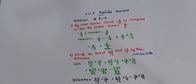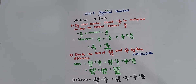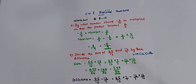9th question: divide the sum of 65 by 12 and 12 by 7 by their difference. First, find the sum of 65 by 12 and 12 by 7, then find the difference, and then divide. Sum: 65 by 12 plus 12 by 7. Find the LCM of the denominators to make equivalent fractions — the LCM is 84. So, 65 by 12 multiplied by 7 by 7.